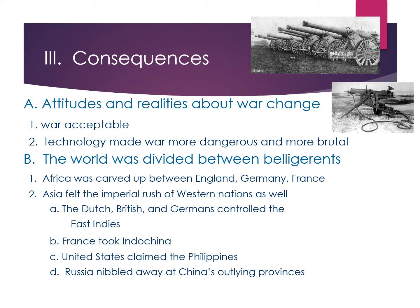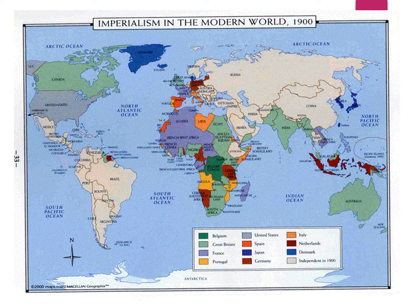Asia also felt the imperial rush of Western nations. The Dutch, British, and Germans were controlling the East Indies. France took Indochina. The United States, after the Spanish-American War of 1898, claimed the Philippines. Russia was nibbling away at China's outlying provinces. A map shows how imperialism and the idea of creating empires was spreading around the world.